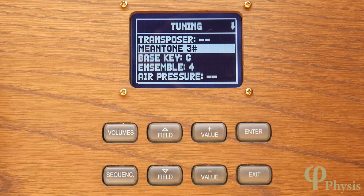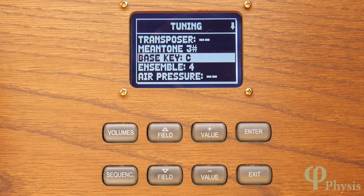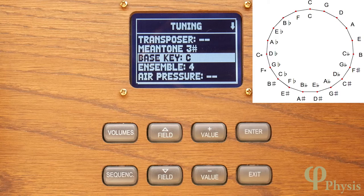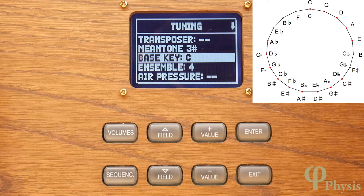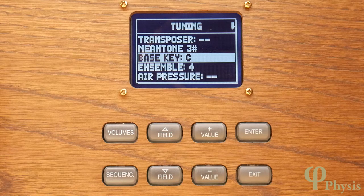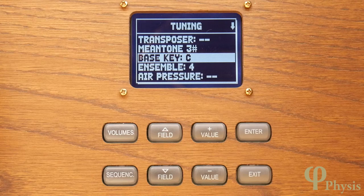Next on the list, the bass key sets the note from which the selected temperament's circle of fifths is started. This needs to follow the transposed pitch of notes if the transposer is used. So for example, if you're playing at baroque pitch with the transposer set to minus one and you want the bass key to be equivalent to written C, then the bass key should normally be set to B.